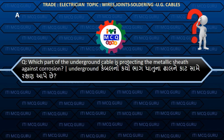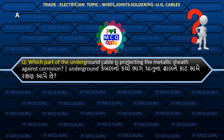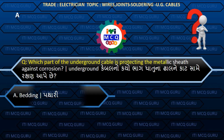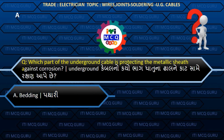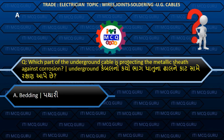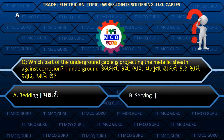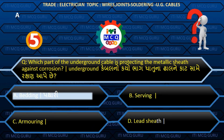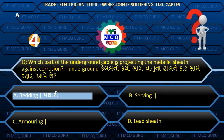Which part of the underground cable protects the metallic sheet against corrosion? (Underground cable noo kayo bhaag dhatu na dhal ne kaat saame rakshan aape chhe?) Answer A: Bedding.